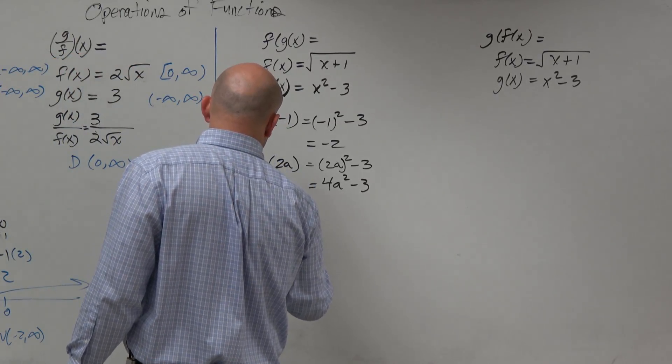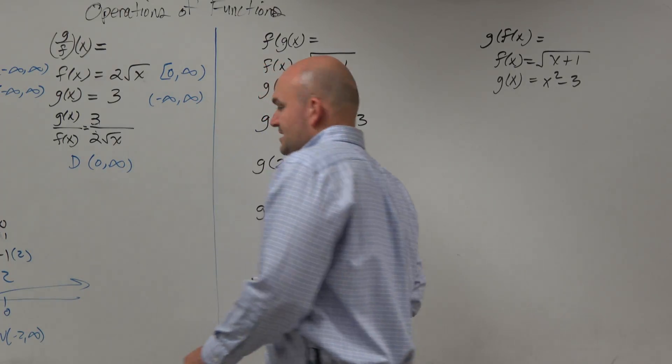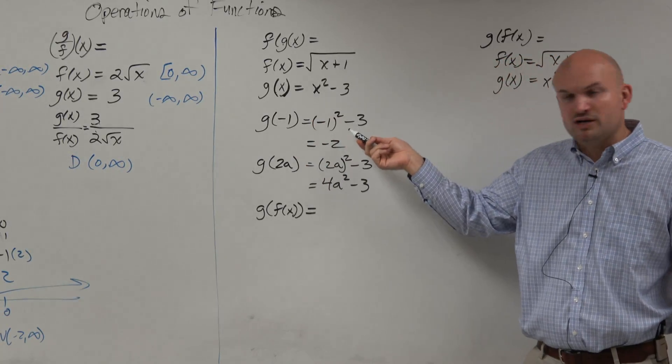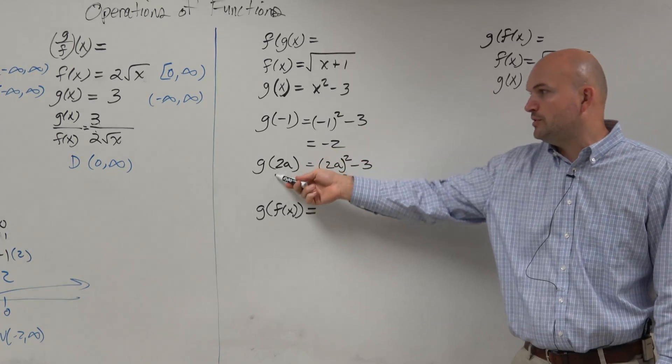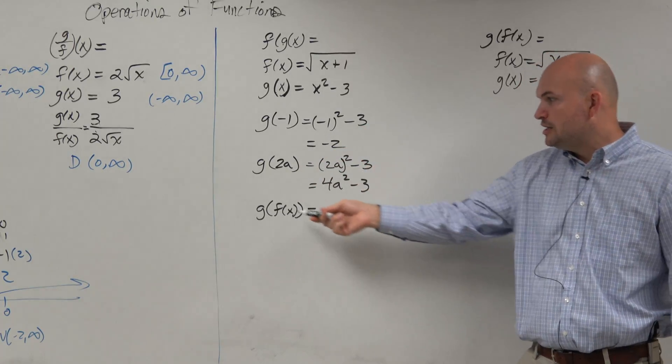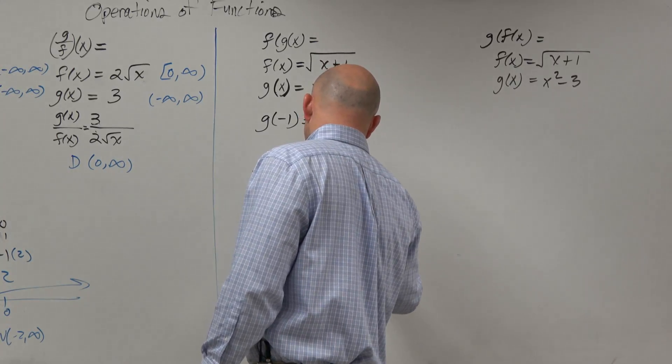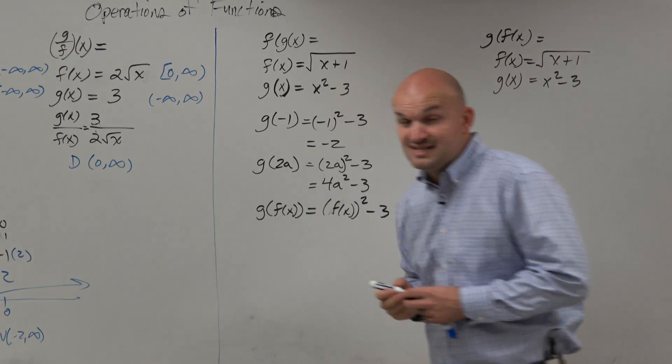you also did this in, and then my question to you is, well, then what if I plugged in f of x? And you'd say, well, if I'm following the pattern that you're doing, whatever you put in here, you put in for the input variable. So if you put in negative 1, I replace the x with the negative 1. If you put in 2a, I replace the x with the 2a. So if you want to put in f of x, then I'm just going to put the f of x in for that x input variable.